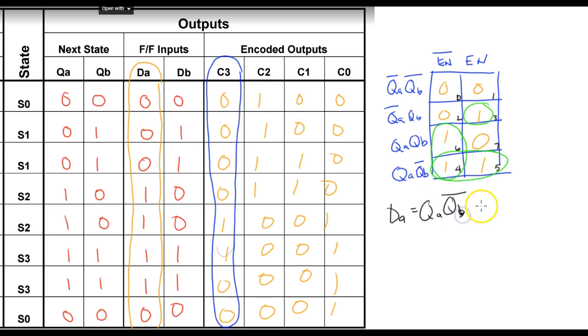It's supposed to be a B. And plus I have this row here, these two. And that is QA, enable not. Plus, finally, I'm going to run out of room here. We'll write real small: QA not, QB, enable.